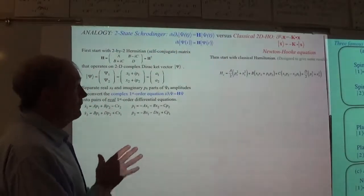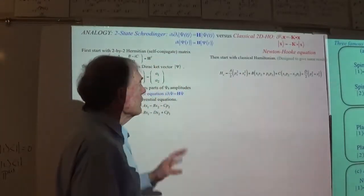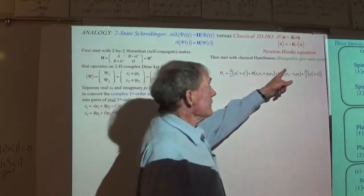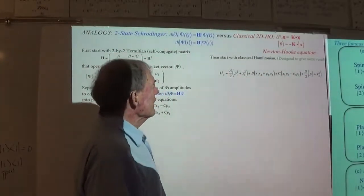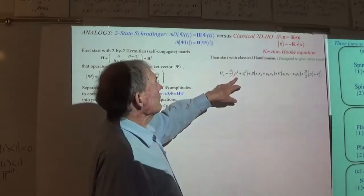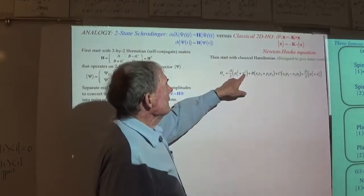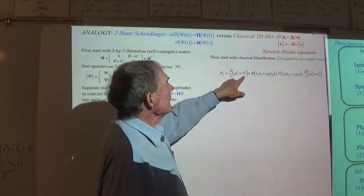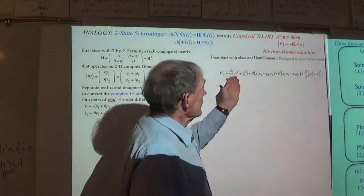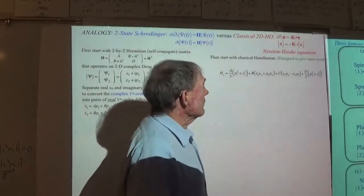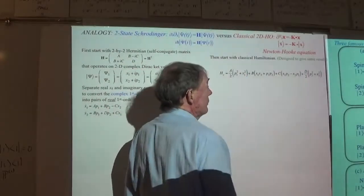What I'm going to do instead of just going right for this is make a classical Hamiltonian designed to give this result. Instead of being one-half P-squared over mass, I'm putting all of the parameters on the outside. I don't have any K in front of the X1-squared. The same thing is true for P2-squared plus X2-squared — those are the kinetic parts with the quadratic potential, plus a constant.